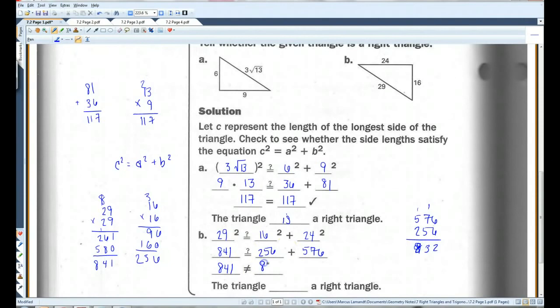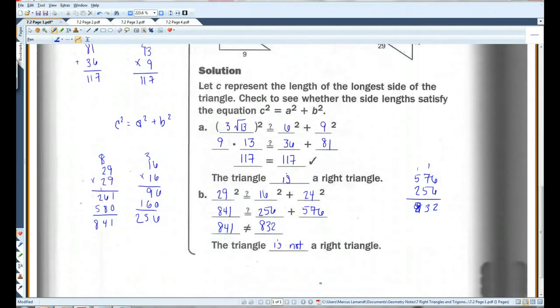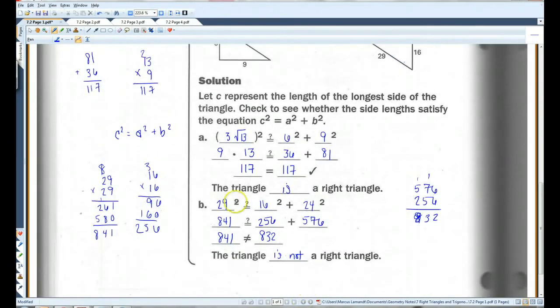8, 32. 841 does not equal 832, so the triangle is not a right triangle. So if the equation checks out, it's a right triangle. If it doesn't, it's not a right triangle.